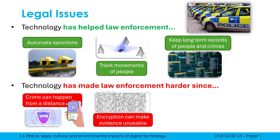When law enforcement comes across crucial evidence, the criminal might be savvy and might have encrypted it, and even the police aren't able to understand what the encrypted text says unless they can somehow figure out the encryption key. This might include messages being sent or files on a computer — if they're encrypted well, it's not really usable to the police.